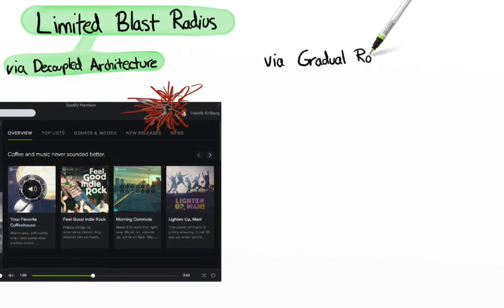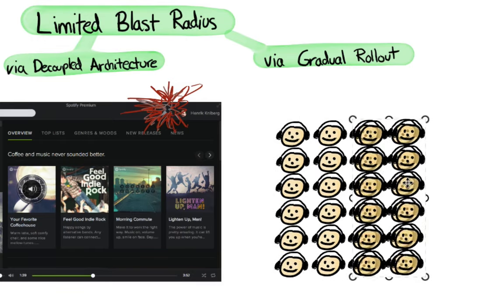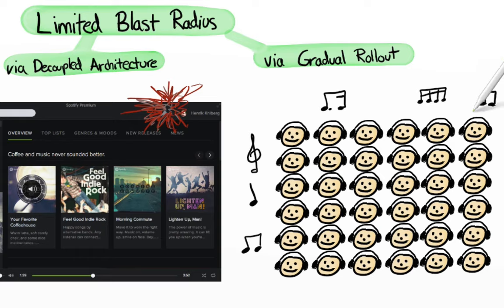Also, most new features are rolled out gradually, starting with just a tiny percent of all users and closely monitored. Once the feature proves to be stable, we gradually roll it out to the rest of the world. So if something goes wrong, it normally only affects a small part of the system for a small number of users for a short period of time. This limited blast radius gives squads courage to do lots of small experiments and learn really fast, instead of wasting time trying to predict and control all risk in advance.